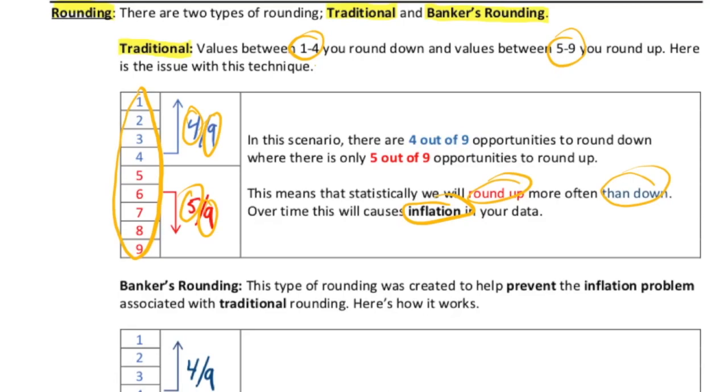You can imagine that being a major problem with the financial sector. If we went with traditional rounding in the financial sector, after doing tens of thousands of calculations, the numbers that you would have on the books would be larger than the actual amount that you would have in your accounts. That's just an untenable situation. So there needed to be a different technique developed to prevent or at least mitigate this amount of inflation. That's where we get banker's rounding.